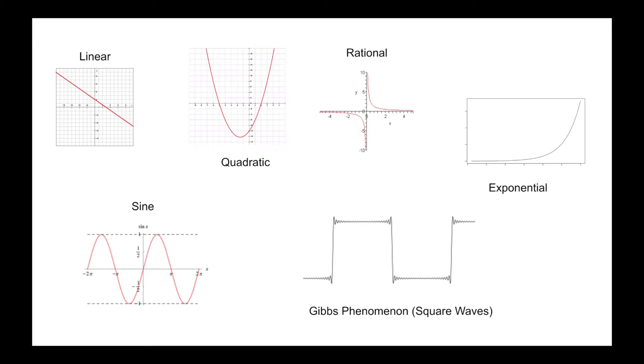However, there are also other graphs made using sine, cosine, and so on. These graphs create waves which can be connected to real-world examples like sound waves. One wave that is super interesting, made of sine and cosine waves, is the square wave known as Gibbs phenomenon.